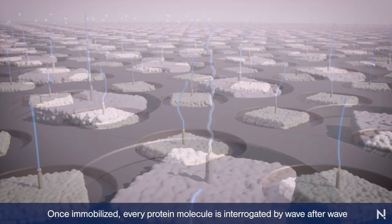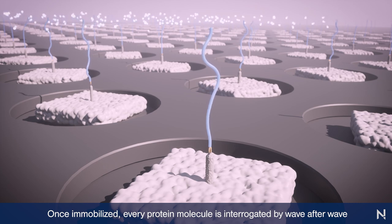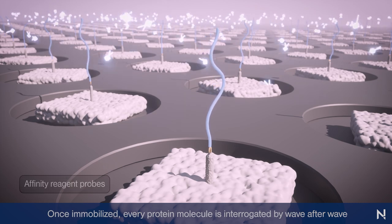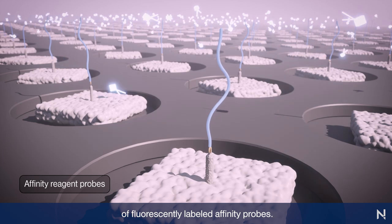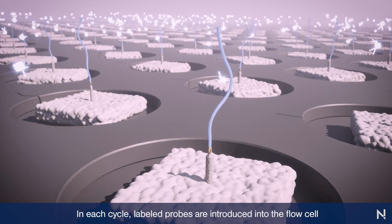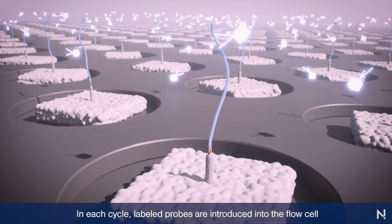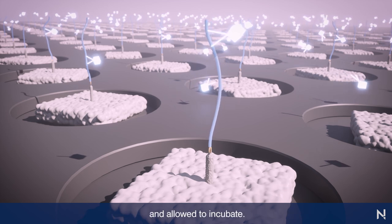Once immobilized, every protein molecule is interrogated by wave after wave of fluorescently labeled affinity probes. In each cycle, labeled probes are introduced into the flow cell and allowed to incubate.